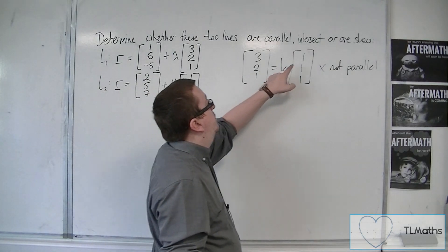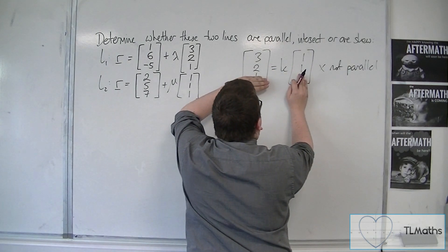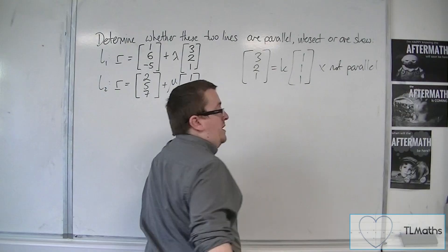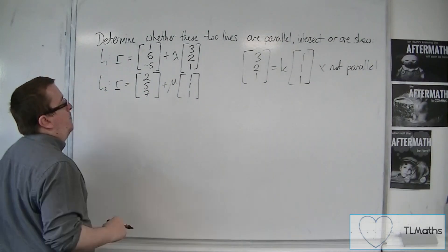Because k would have to be 3 in order for the top row to work. But then if k is 3 for the second row, you've got 2 is equal to 3. So it doesn't. It fails. So they're definitely not parallel.